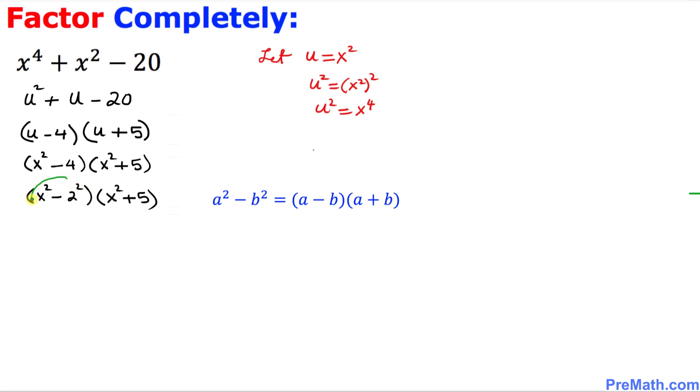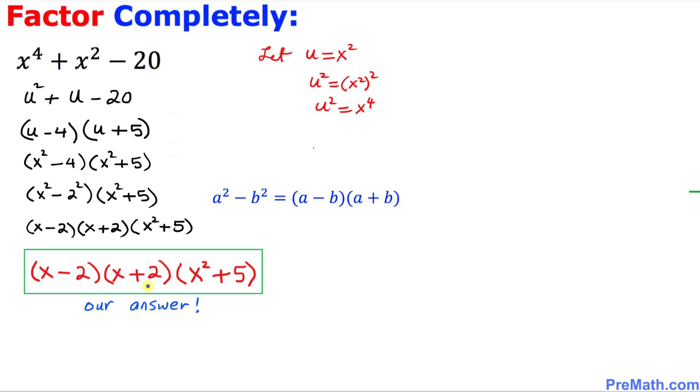As we can see, this first parentheses represents a difference of 2 squares. We are going to use this well-known fact: a squared minus b squared could be written as a minus b times a plus b. So I'll break that down into x minus 2 times x plus 2. This whole thing has been factored into this part, and we bring down x squared plus 5. We know that x squared plus 5 cannot be broken down further. It's irreducible. Thus, these are our complete factors and our final answer.